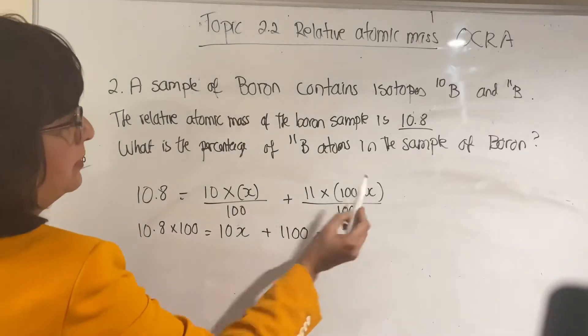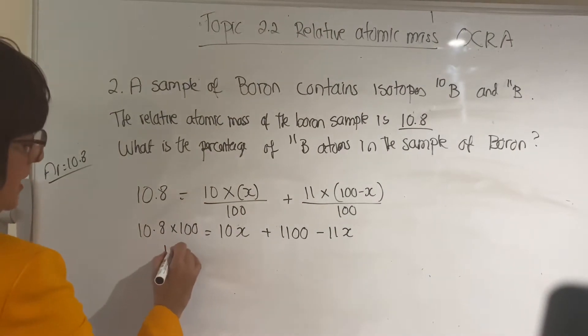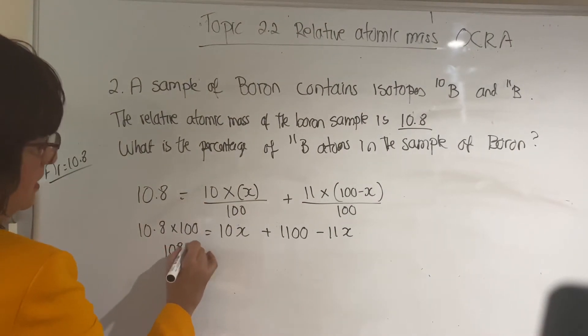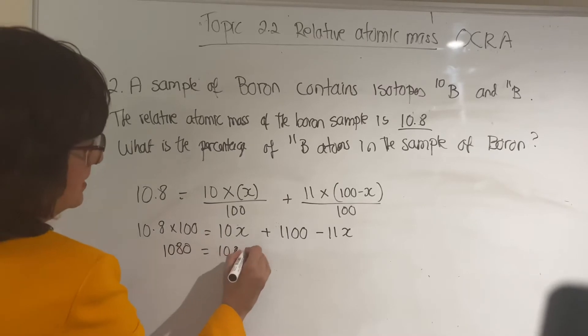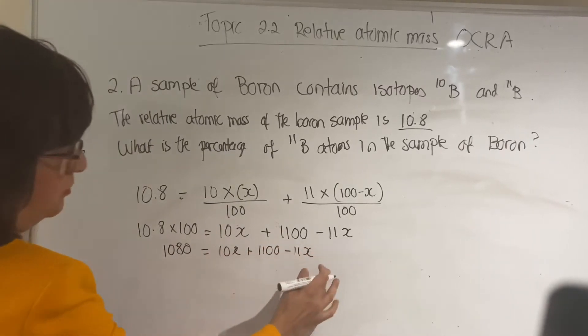So 10.8 times 100 is 1080, equals 10x plus 1100 minus 11x. So if you move everything to the other side, the axes would be 11x.